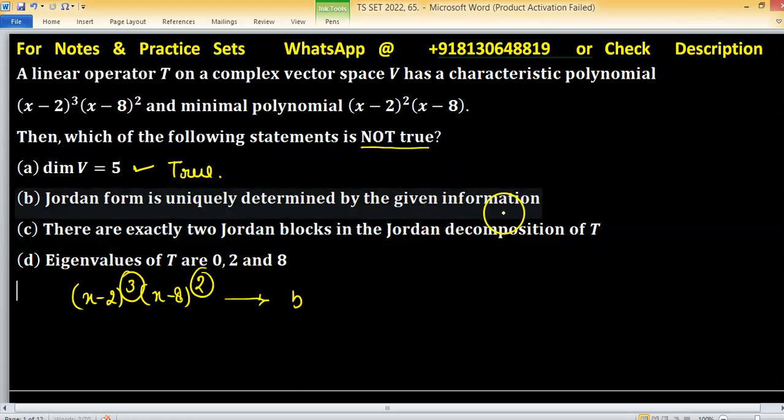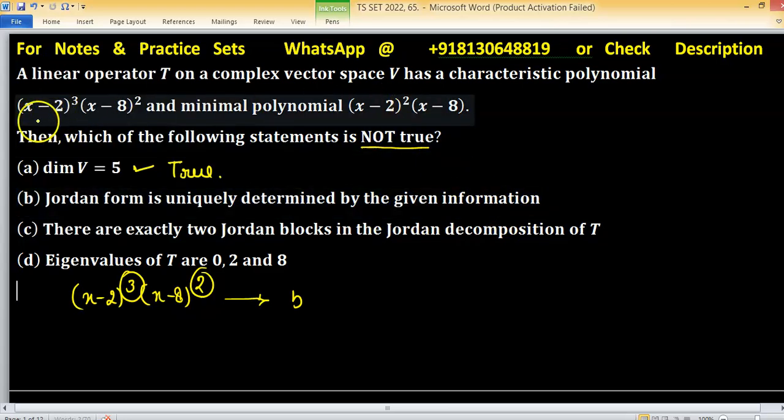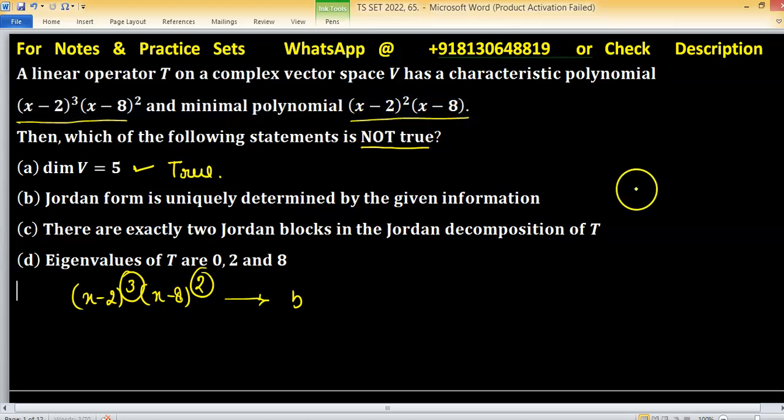by the given information. This statement is also true because we have both the characteristic polynomial and minimal polynomial, so we can uniquely determine the Jordan form. This statement is true.